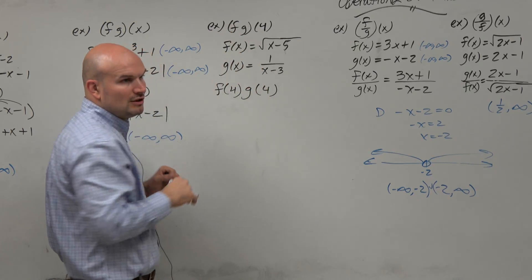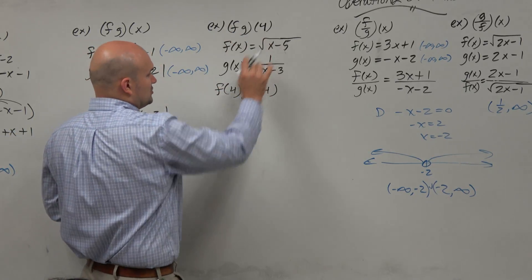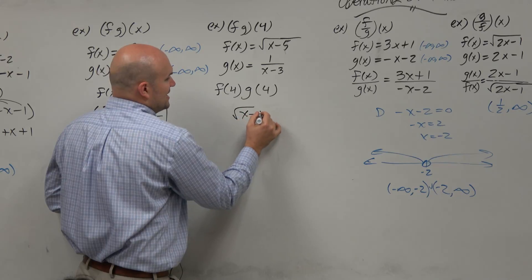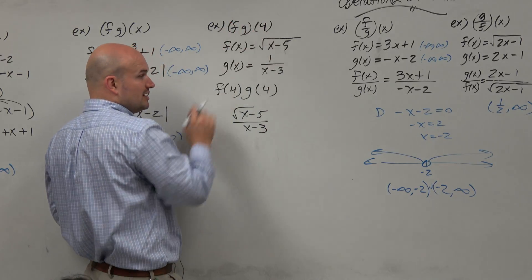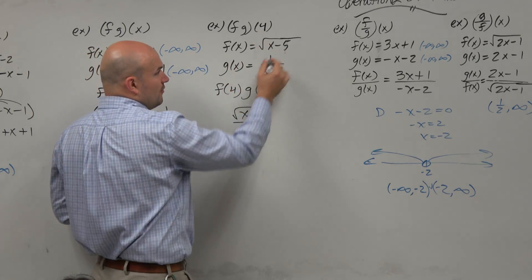So you can do the mathematical operations like we did. You could multiply these to get x minus 5 over x minus 3, and then you could plug in 4. Or you could just plug in 4 from the beginning.